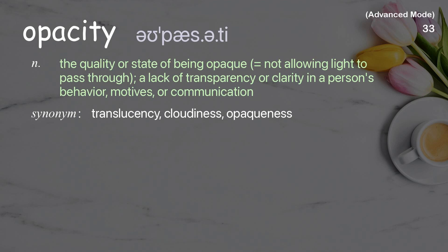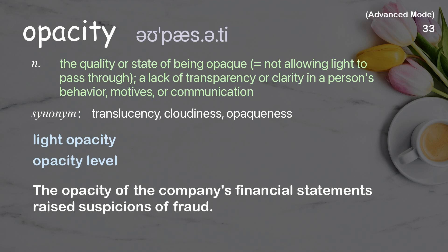Opacity. The quality or state of being opaque — not allowing light to pass through; a lack of transparency or clarity in a person's behavior, motives, or communication. Examples: light opacity; opacity level. The opacity of the company's financial statements raised suspicions of fraud.